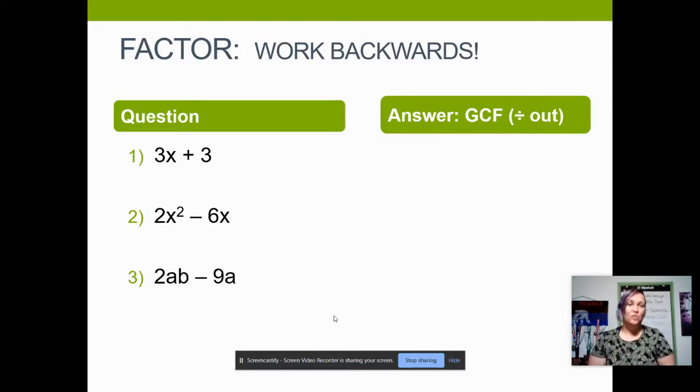For our first question, 3x plus 3, the GCF is the number 3. There are no variables because the first term has a variable, but the second term does not. So it's okay to just have a number for a GCF. So we're going to write a 3 outside the parentheses. You have to make sure that inside the parentheses, you still have a binomial. So 3x divided by 3 is x. And then over here, 3 divided by 3 is 1. So if the entire term was also the GCF, then you're going to put a 1 in that place. So we still have the binomial on the inside.